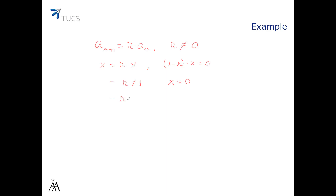Now, if r equals 1, then this equation becomes 0 times x equals 0, and that means that there are an infinity of equilibrium points x.